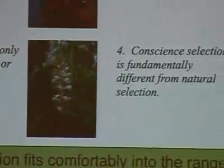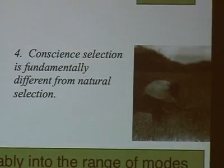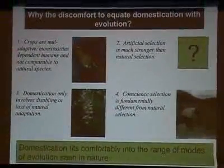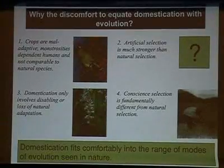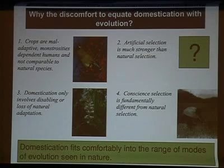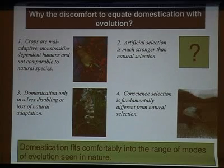Domestication is sometimes said to only involve disabling or loss of natural adaptation, but we see gain-of-function mutations in domestication that create new things different from the wild species. And natural evolution also involves loss of function — a parasitic plant like Orobanche has completely lost its photosynthetic capability by deleting photosynthesis genes, probably making it a better parasite. Domestication is adaptation to a new environment — the human-controlled environment — and the idea that early domestication was largely unconscious means conscious artificial selection isn't fundamentally different from natural selection.